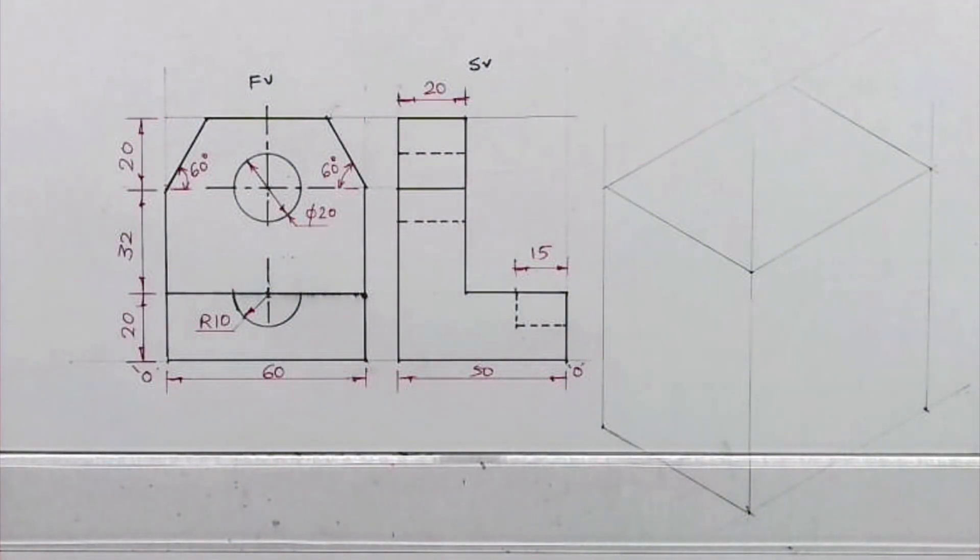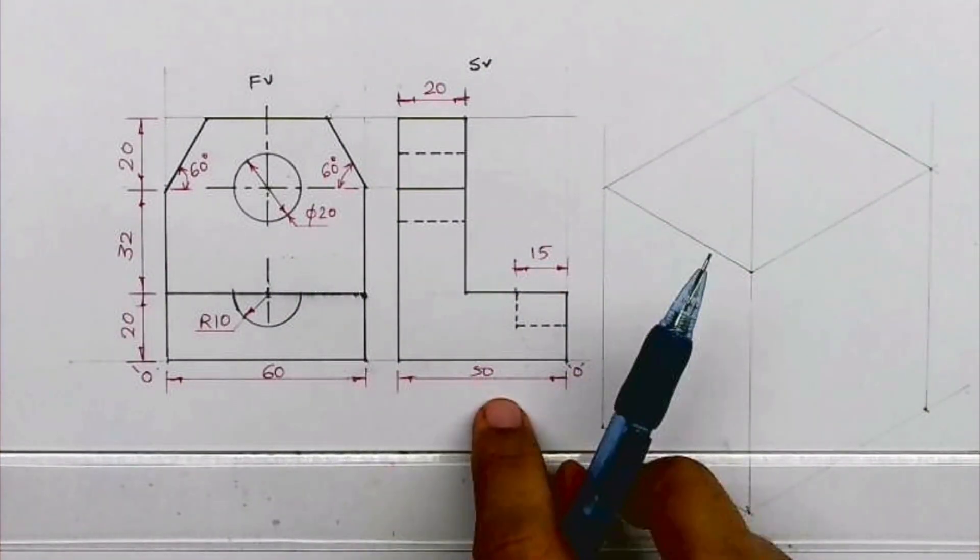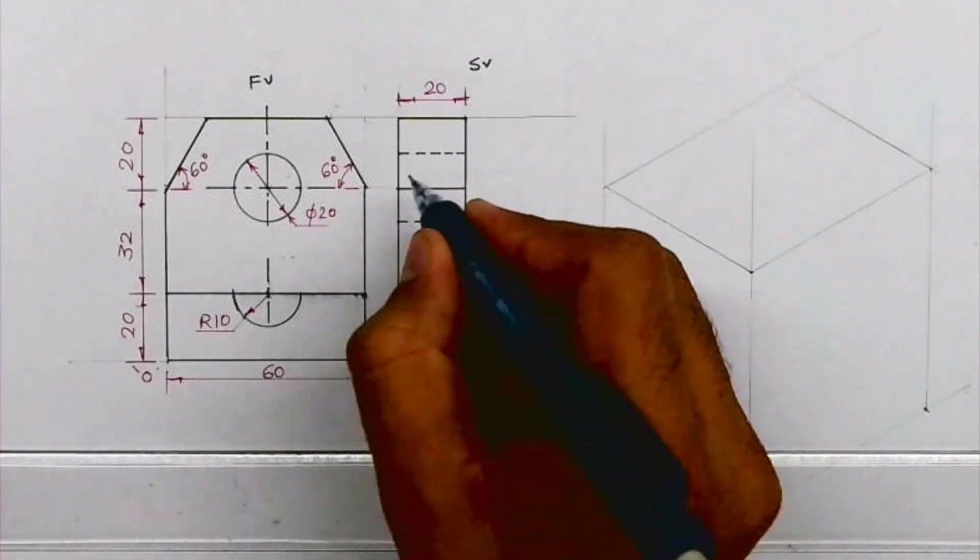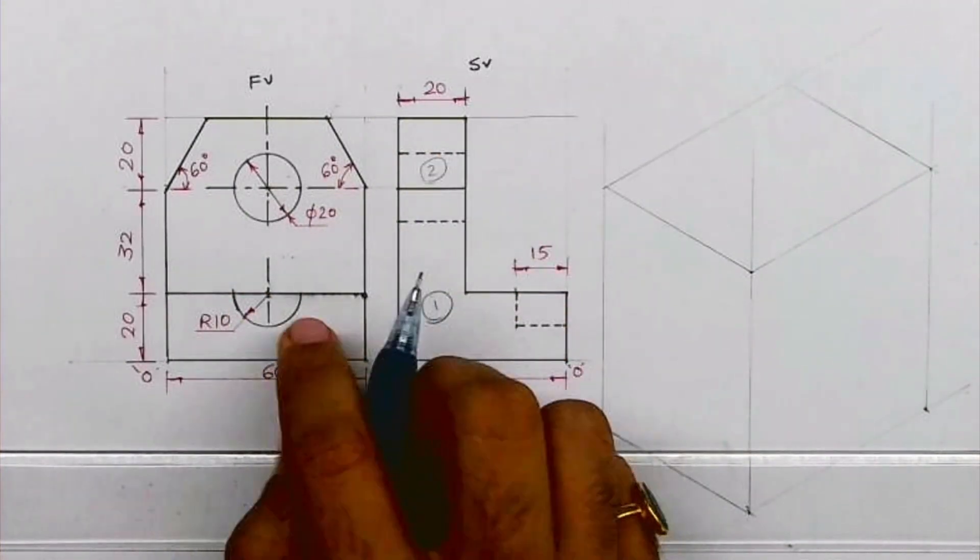Welcome to technical drawing. Today we'll do the sum and isometric. Front view and side view is given. If you see inside view we have two parts, part one and two, and in front view we have one, two, three, three parts.